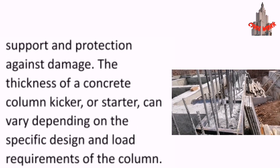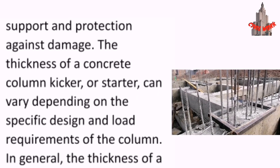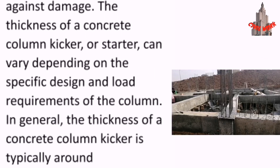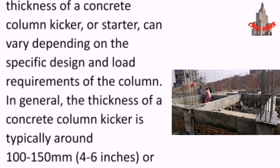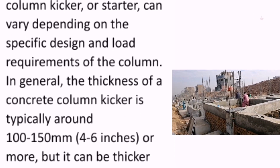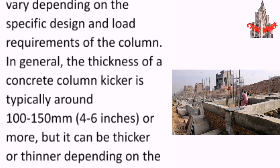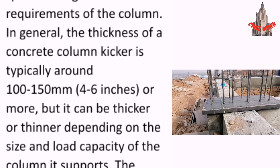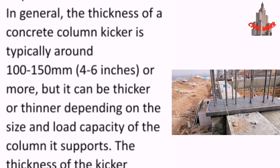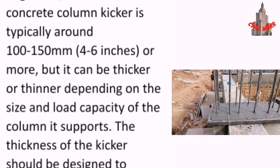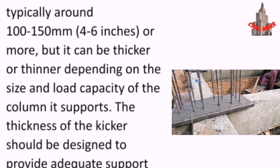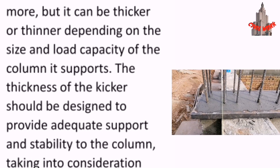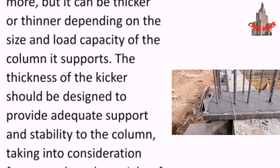The thickness of a concrete column kicker or strutter can vary depending on the specific design and load requirements of the column. In general, the thickness of a concrete column kicker is typically around 100 to 150 mm, or 4 to 6 inches or more, but it can be thicker or thinner depending on the size and load capacity of the column it supports.